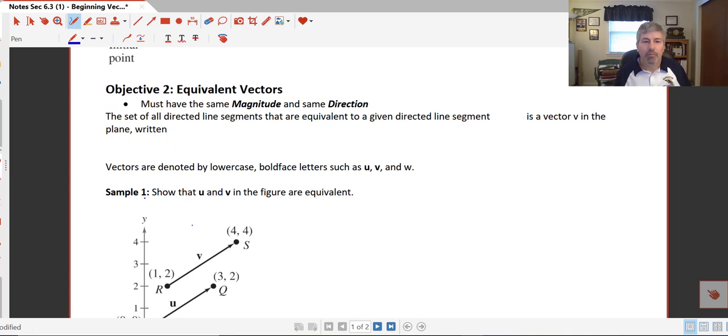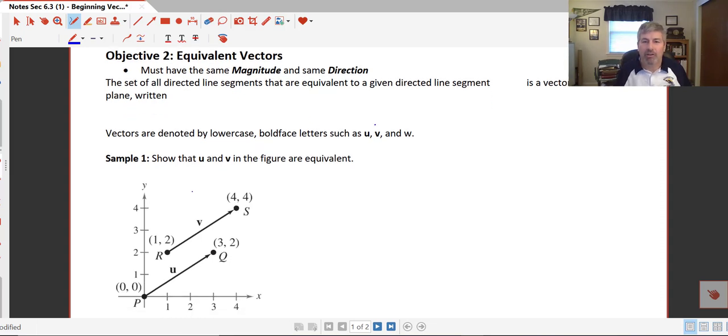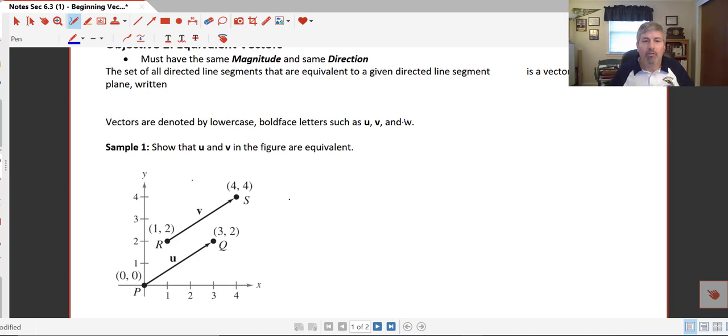So we've got this plane down here in sample one, and vectors are denoted by lowercase and boldface letters such as U, V, and W. So we want to show that these two vectors, U and V, are equivalent. So in order to have that, they must have the same magnitude, and they also must have the same direction.